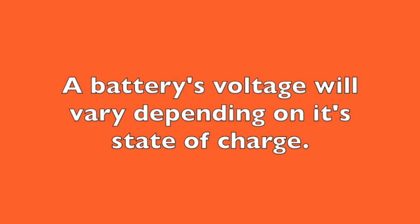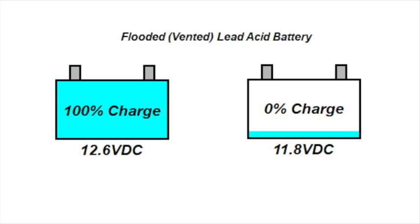When a flooded, that is vented, lead acid battery is 100% charged, it will have an open circuit voltage of 12.6 volts DC. When it is fully depleted with 0% charge, the voltage will be around 11.8 volts DC.